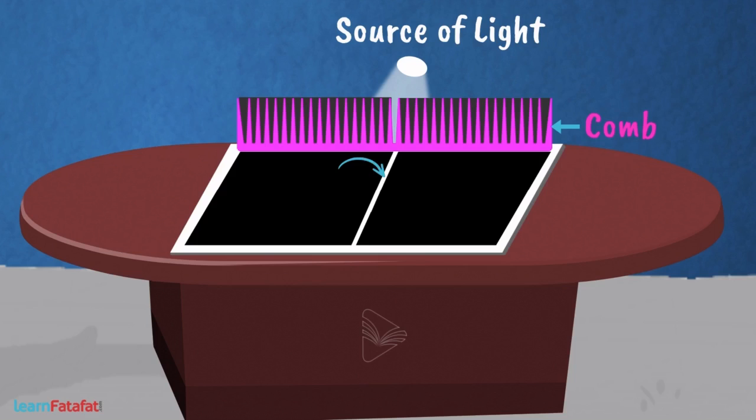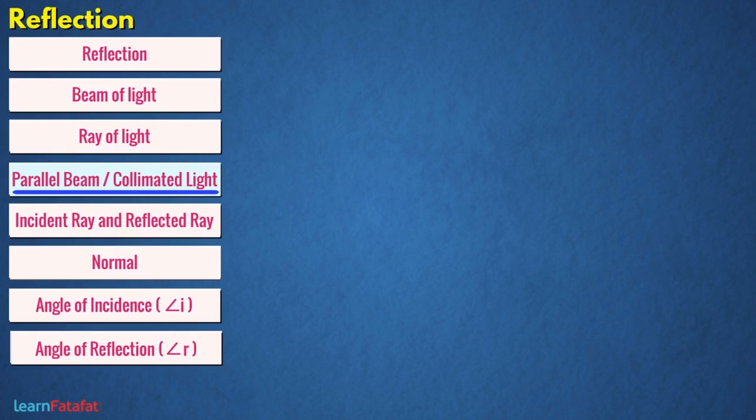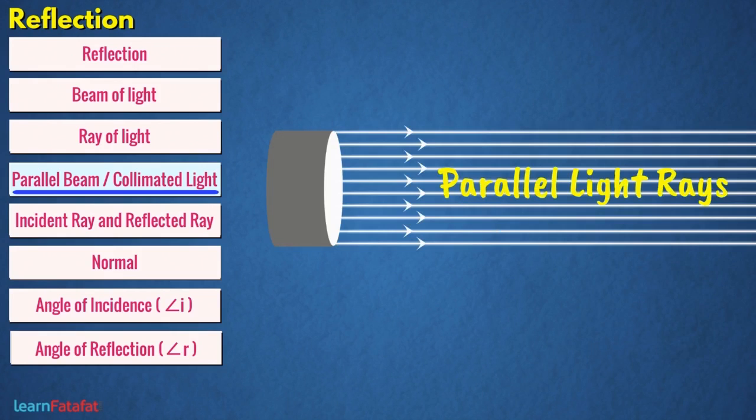it produces a beam of light along the paper on the other side of the comb. It is a ray of light. Parallel beam or collimated light: when light rays are traveling parallel to each other, then the light is called parallel beam or collimated beam.